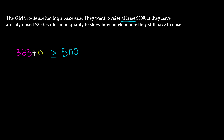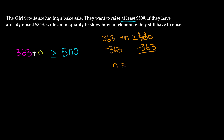If we solve this inequality — 363 plus N is greater than or equal to 500 — we subtract 363 from both sides, leaving us with N is greater than or equal to 137. So the value of N can be equal to 137 or more than 137. They have to at least raise $500, so if they've already raised $363, they still need to raise at least $137, but they can exceed that and raise more.